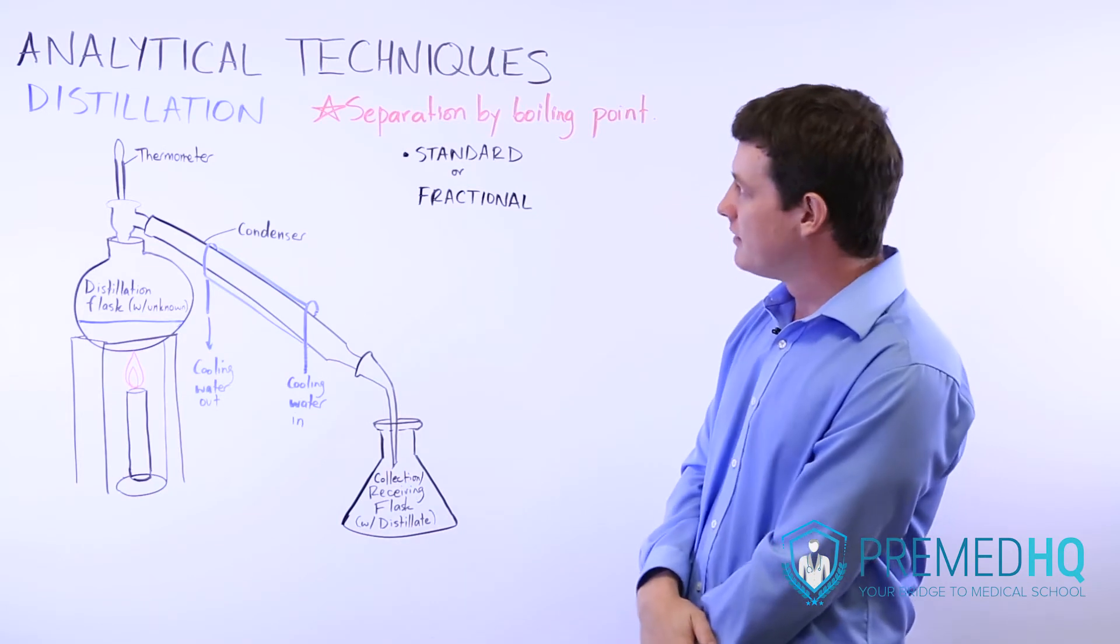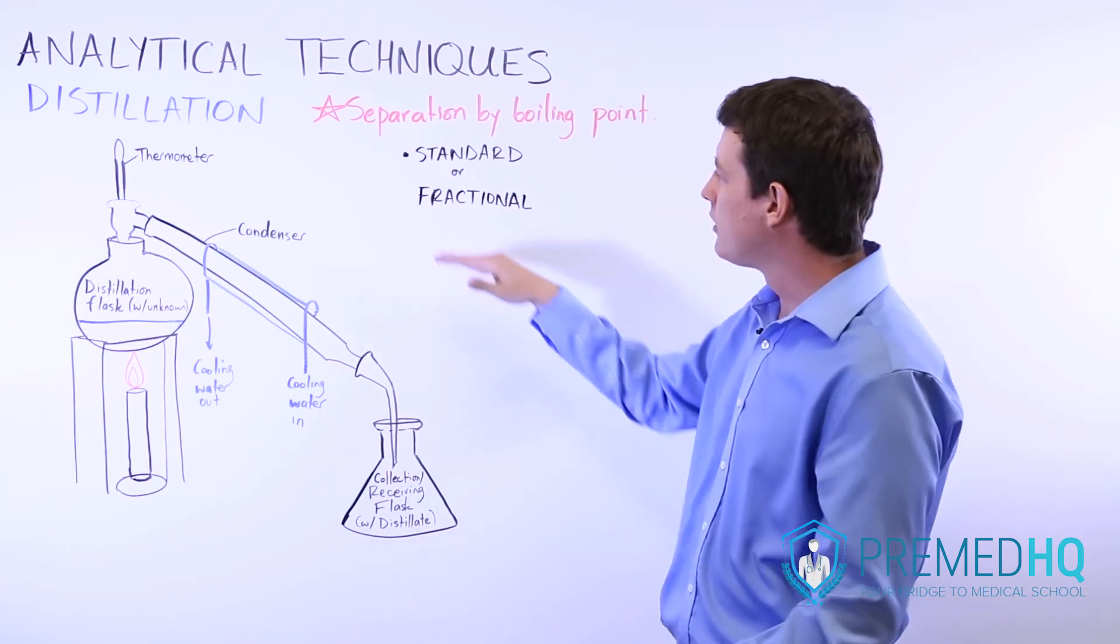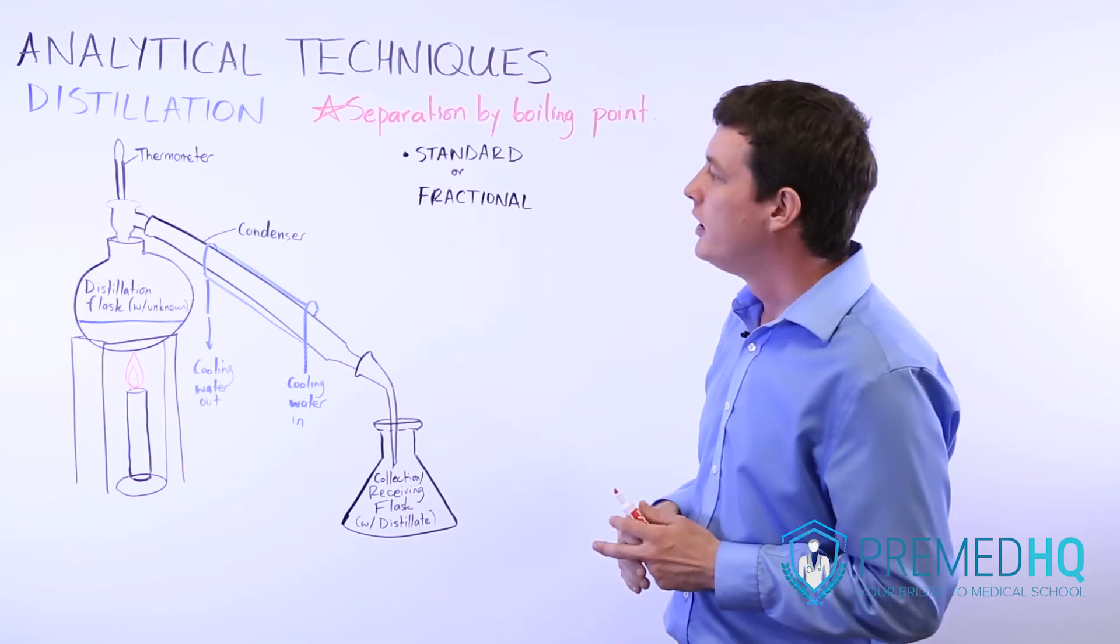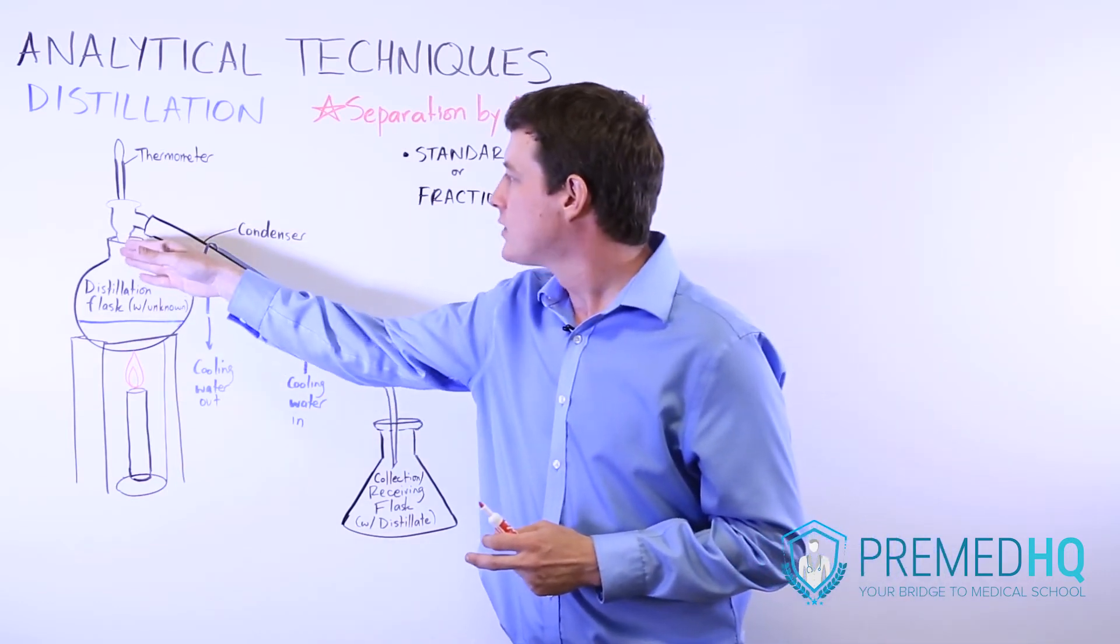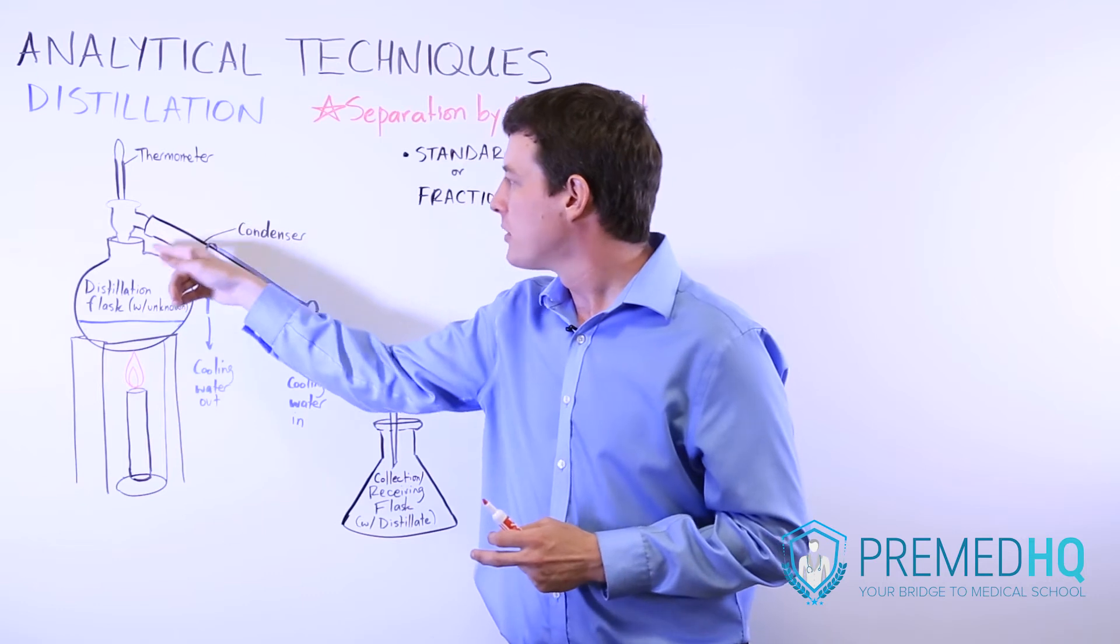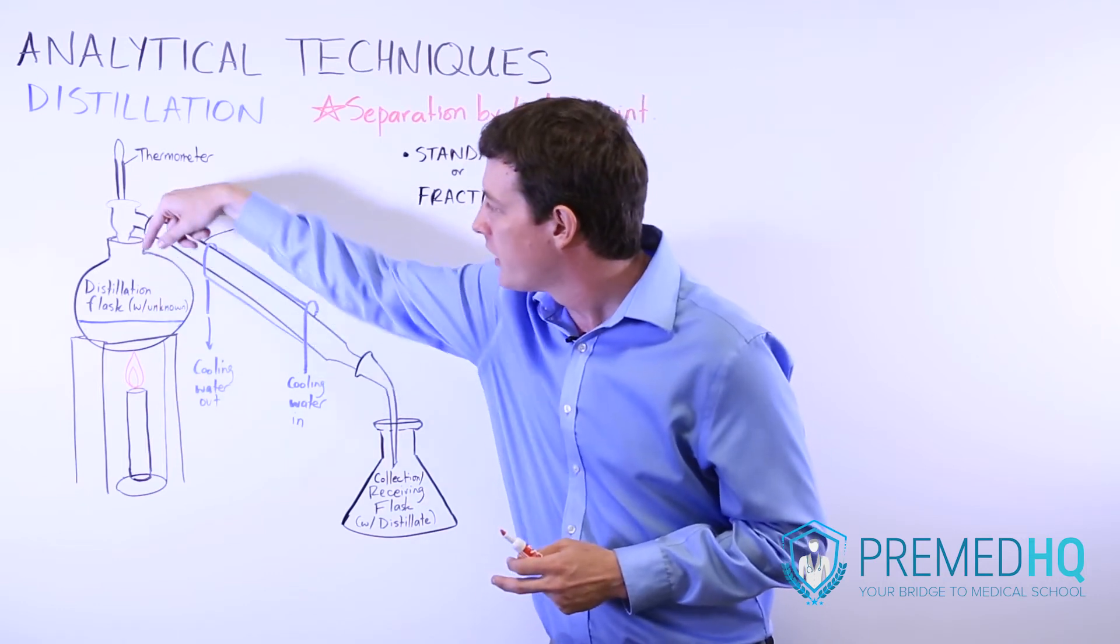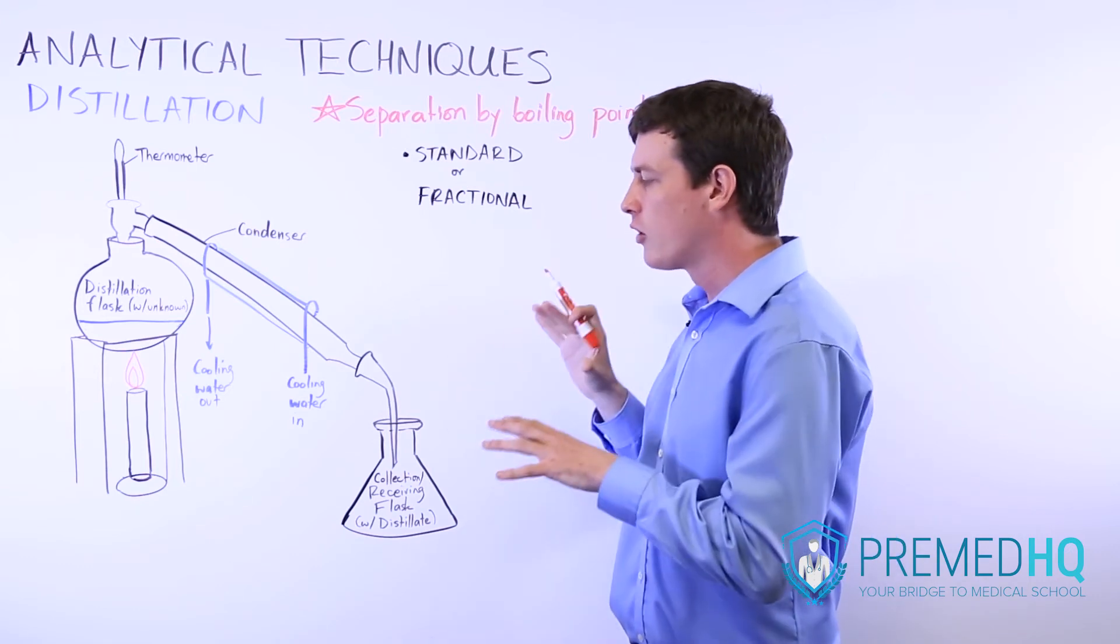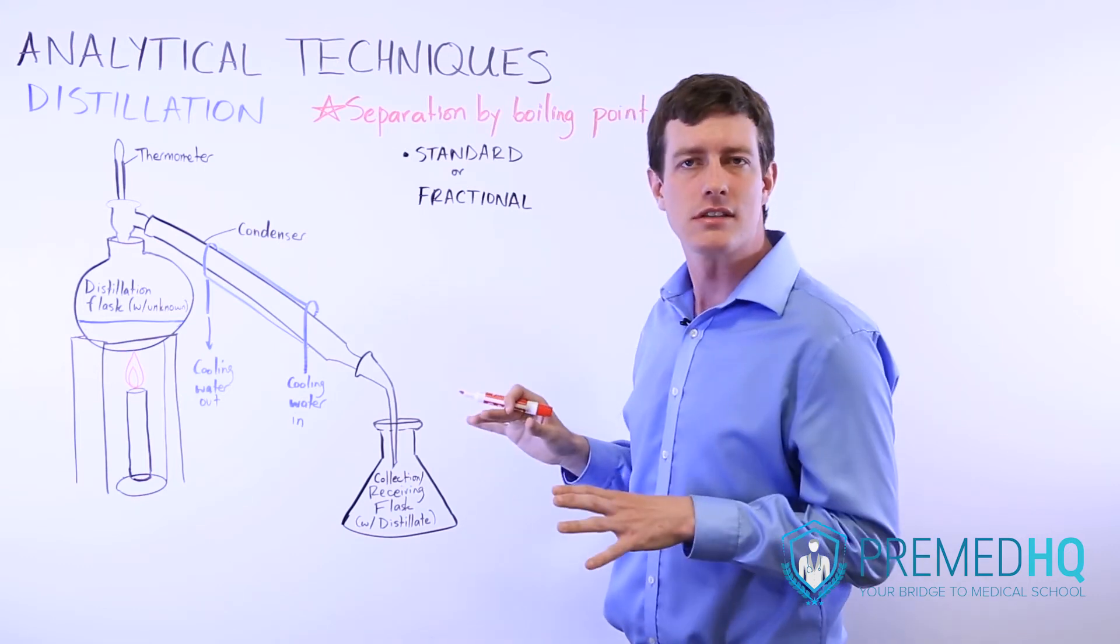One variation of distillation that you'll encounter is called fractional distillation. It's a variant where you use packed beads or perhaps some copper mesh surrounding this area, and that has the effect of increasing the accuracy of your distillation.